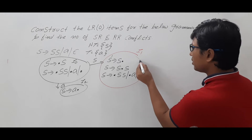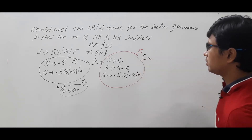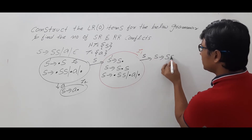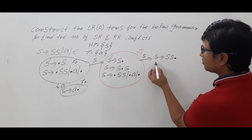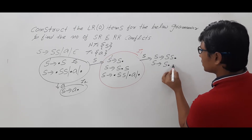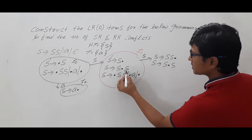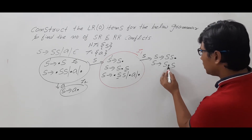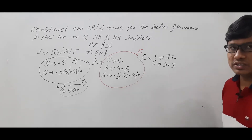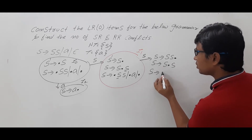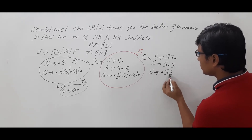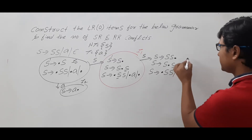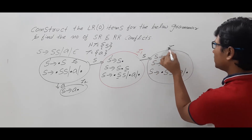If you look at this one, goto I1 on S will be S → SS•. From S → S•S, wherever S is there you need to write the goto. After the dot again there is an S which is a non-terminal, so I need to compute the closure. I need to write •SS, •A, or •epsilon. This is my item number I3.